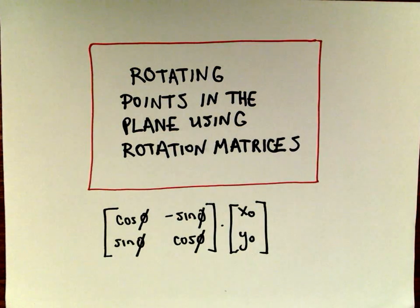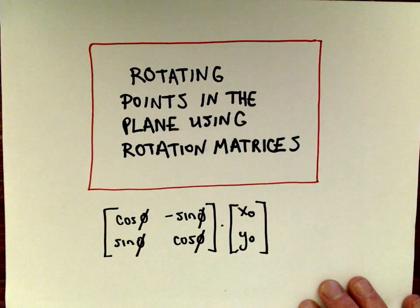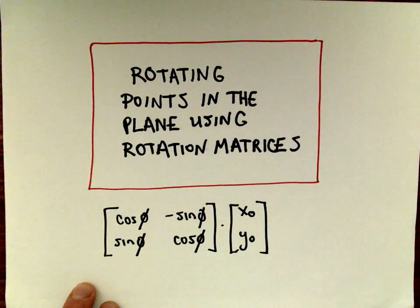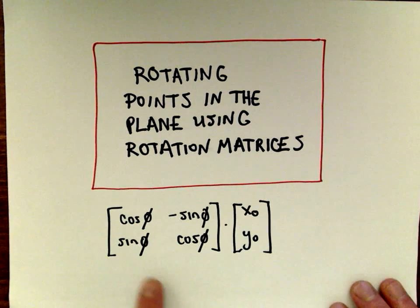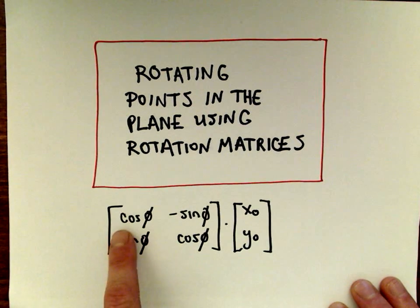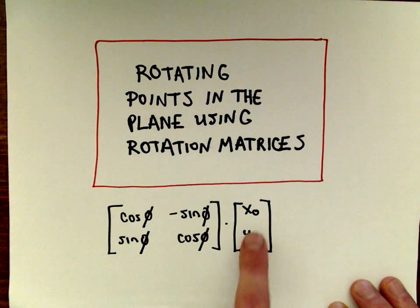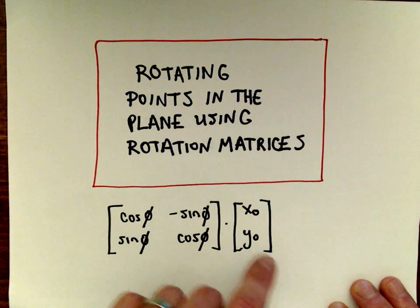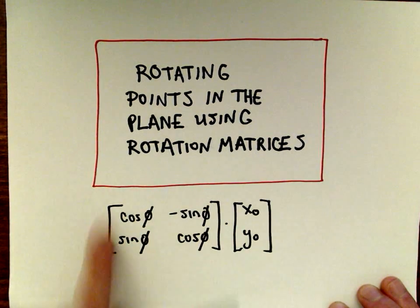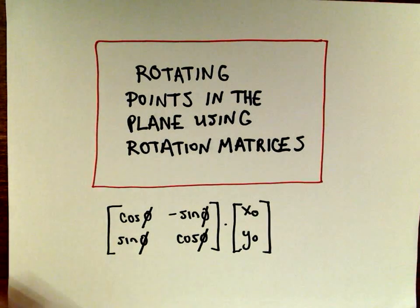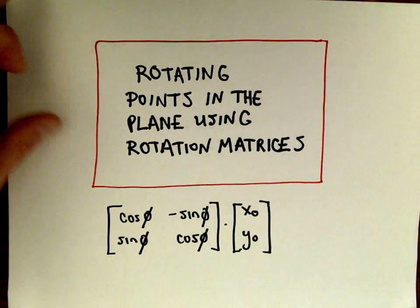In this video, I want to talk about rotating points in the plane using rotation matrices. You may have seen a formula like this — I'm going to actually derive this formula, and that's going to be the beginning part of the video. After that, we'll do at least one quick plug-and-chug problem. The matrix is cosine of phi, negative sine of phi, sine of phi, cosine of phi, and the idea is: if you've got some point with coordinates x₀ and y₀ and you rotate it through an angle of phi, we do this arithmetic to come up with a solution.